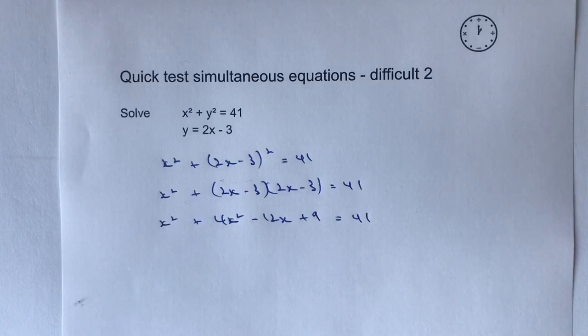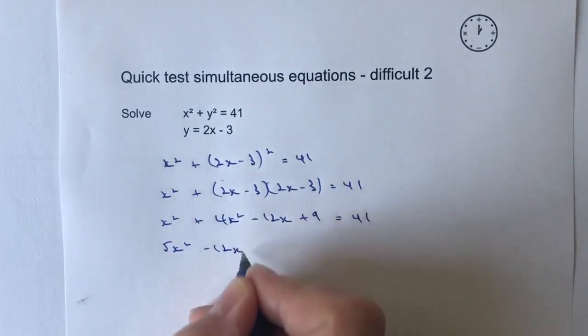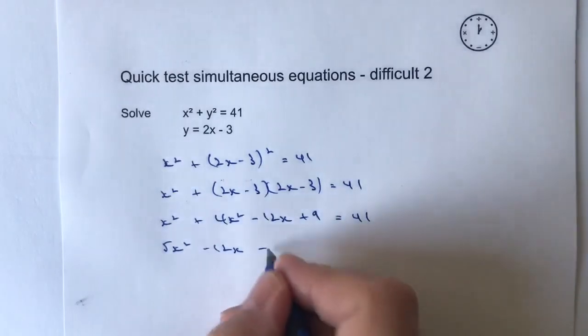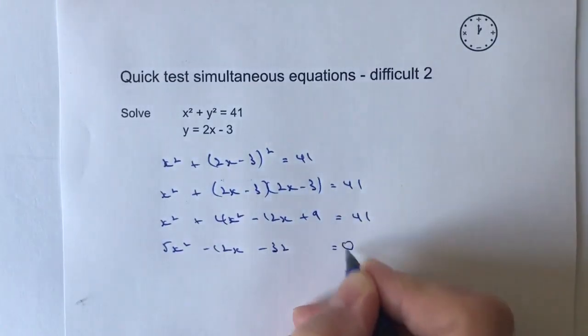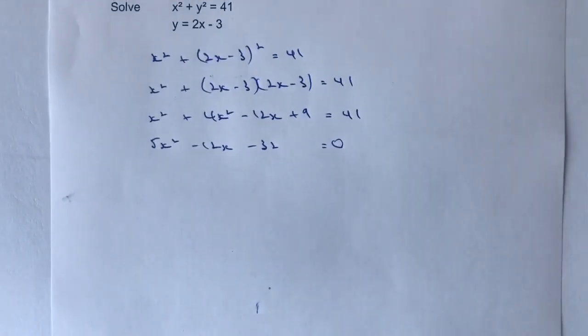Now what I'm going to do is gather up my like terms. So I'm going to bring the x squared terms together. I'm going to get 5x squared. I've got minus 12x. And then I've got plus 9. And I'm going to make this equal to 0. So I'm going to bring my 41 over to the left-hand side and I'm going to get minus 32 equals 0. The reason I've made it equal to 0 is because I do need then to be able to solve this equation. As I'm sure you appreciate at the moment, it's in a quadratic form.